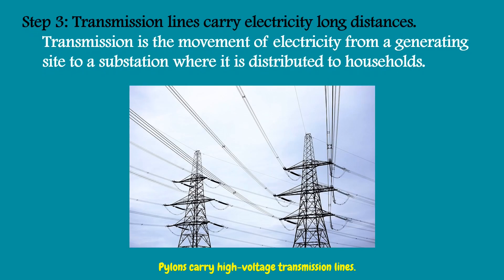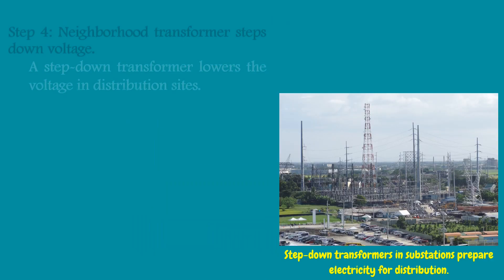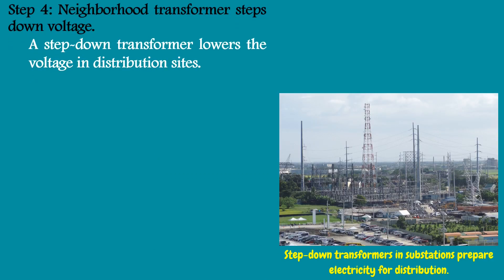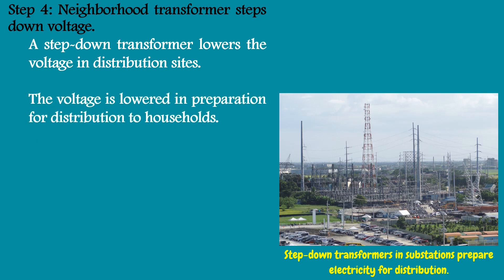Step 3: Transmission lines carry electricity long distances. Transmission is the movement of electricity from a generating site to a substation where it is distributed to households. Step 4: Neighborhood transformers step down voltage. A step-down transformer lowers the voltage at distribution sites, in preparation for distribution to households.